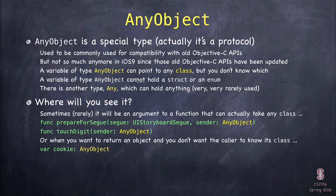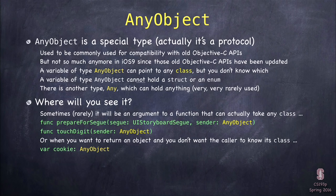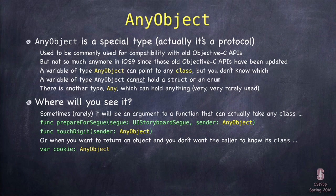Another use for AnyObject is when you want to return essentially a cookie — something you give back where you're giving it to someone, they don't know what's inside of it, and you're not going to tell them. The only thing they can do is give it back to you. The cookie just saves some state. Like browsers have cookies: the site stores some stuff about itself and you in the cookie. The browser has no idea what's in there — it's opaque. It's AnyObject as far as the browser is concerned.